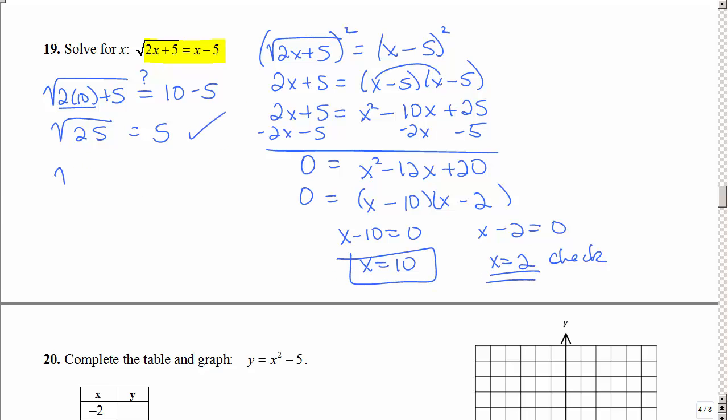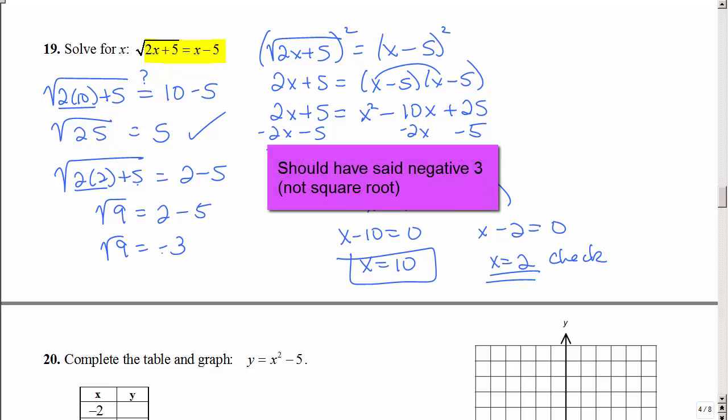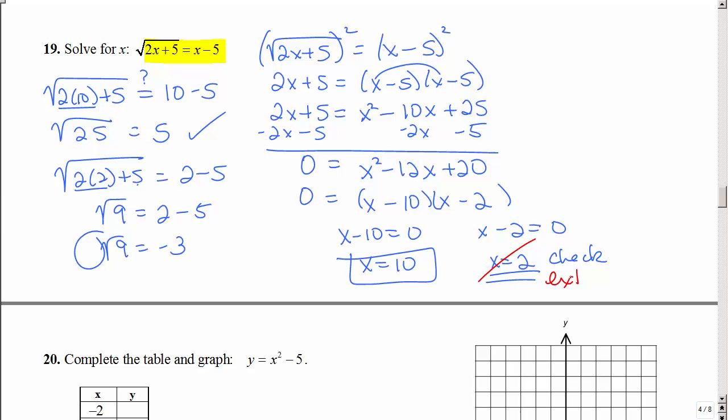Let's check 2. 2 times 2 plus 5, does that equal 2 minus 5? So that's 4 plus 5 is the square root of 9, equal to negative 3. No, because we have the principal root, which is positive. So again, this would be thrown out. This is an extraneous solution. You will lose a point on the final exam if you do not check those answers.